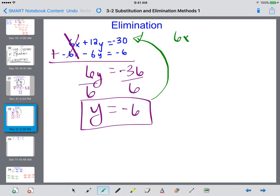So I'm going to have 6x plus 12 times negative 6 equals negative 30. So I have 6x, 12 times negative 6 is a negative 72. That equals negative 30.